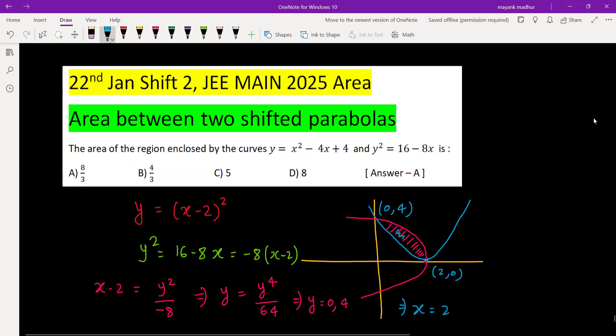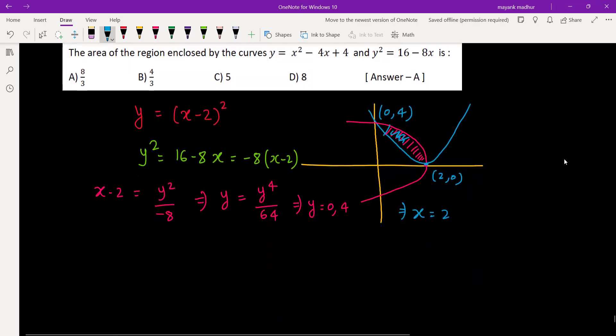And we need the area between them. So we know that if we need area between two parabolas and their vertices are coinciding, then area between them is given by one third of area of rectangle formed using those four points. Like when you make a rectangle like this, then this area's one third will be the area between the parabolas.